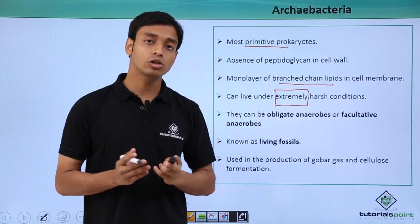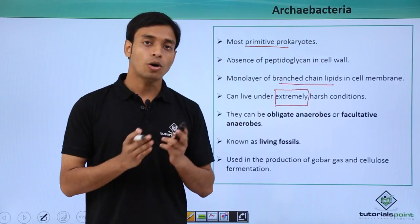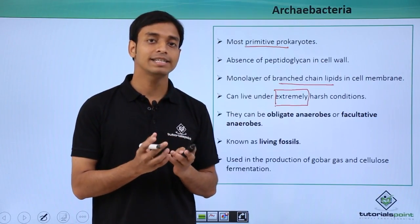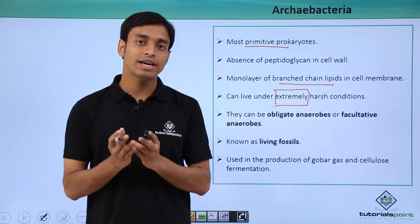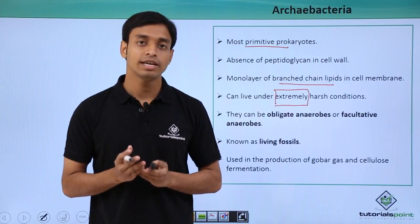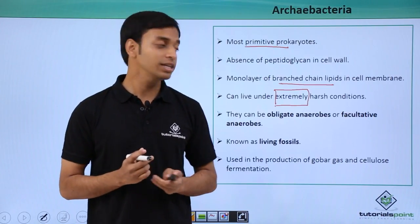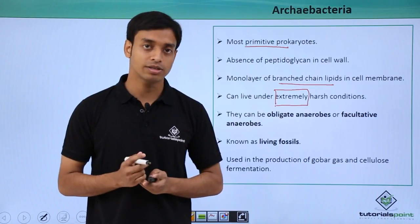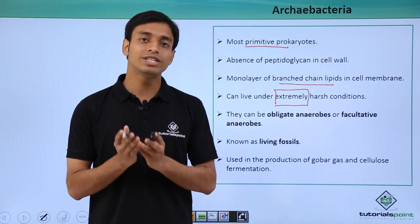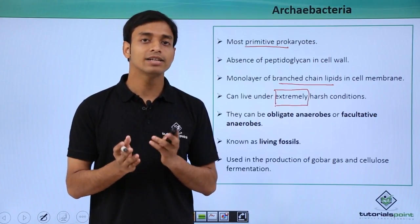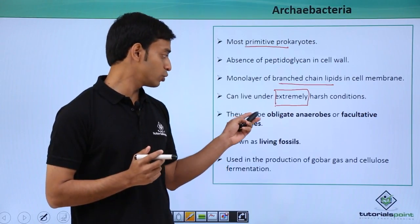Archaebacteria can be obligate anaerobes or facultative anaerobes. Obligate anaerobes cannot tolerate the presence of oxygen — they survive only under anaerobic conditions and will die if oxygen is present. An example is methanogens. Facultative anaerobes can tolerate anaerobic conditions and survive comfortably — an example is thermoacidophiles.